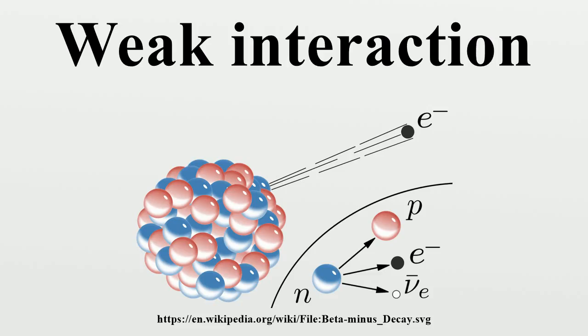There are two types of weak interaction. The first type is called the charged current interaction, because it is mediated by particles that carry an electric charge and is responsible for the beta decay phenomenon. The second type is called the neutral current interaction, because it is mediated by a neutral particle, the Z boson.